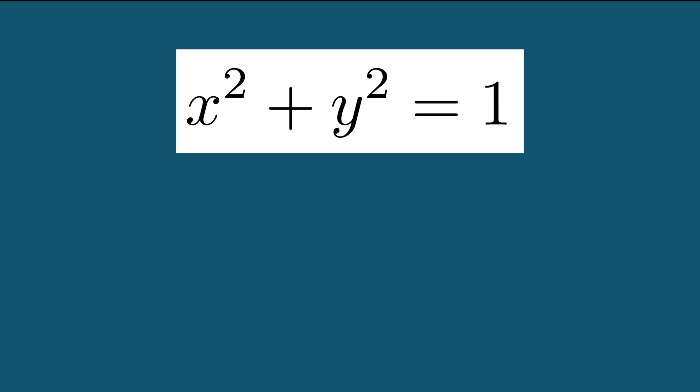This definition states that all points xy that are a distance of exactly one from zero zero make up the unit circle. However, this definition implicitly uses the Euclidean metric as the distance.